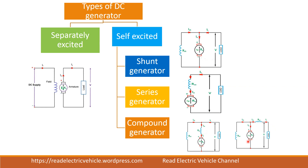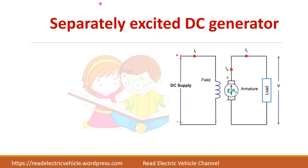Another type is the short shunt compound generator, where the shunt field winding is connected only across the armature, and the series winding comes after that. Now let us see about the separately excited DC generator. As mentioned earlier, the field winding is given a different DC supply, and the armature produces the armature current Ia. Here the armature current and load current remain the same, and V is the terminal voltage.